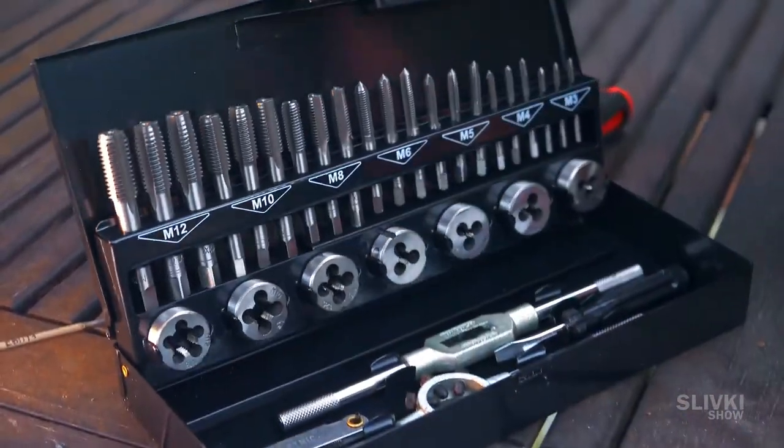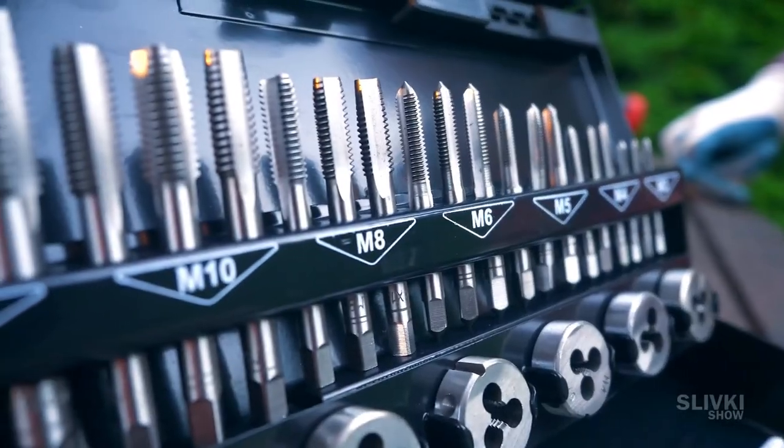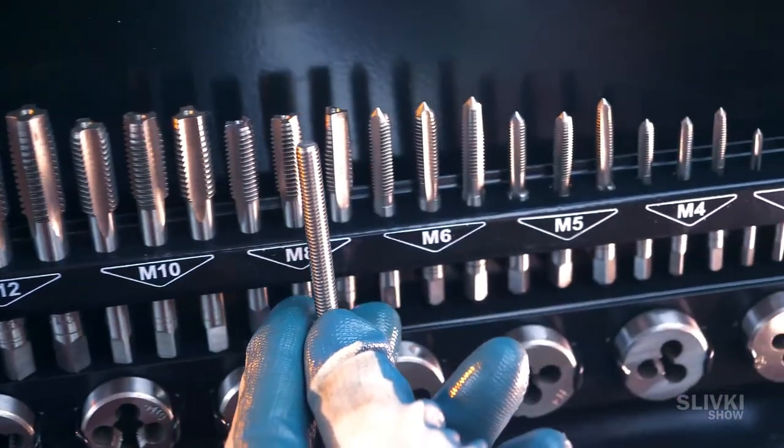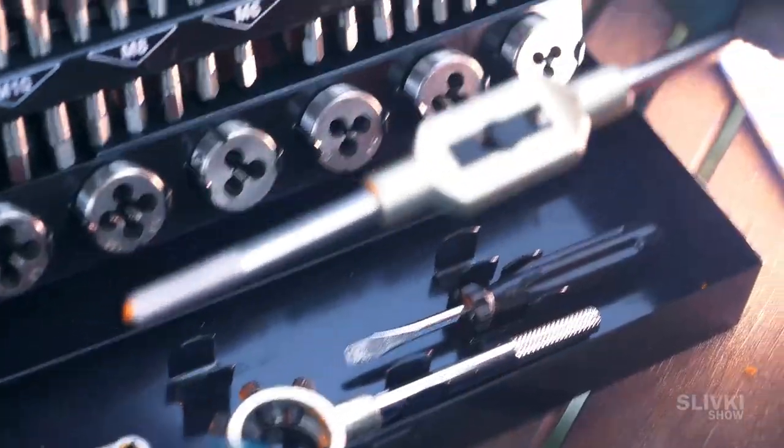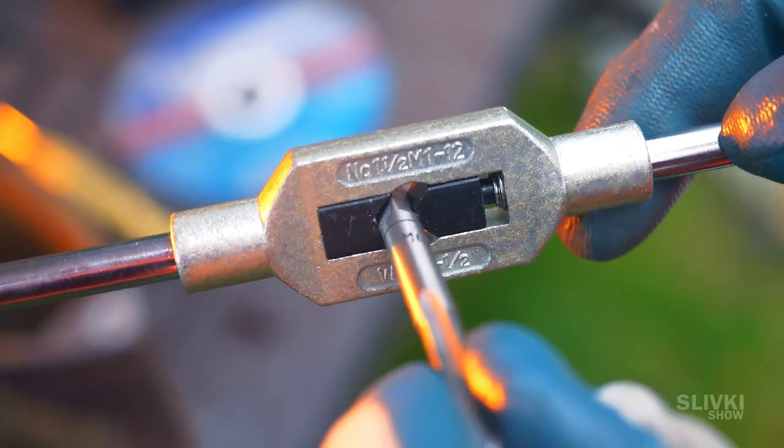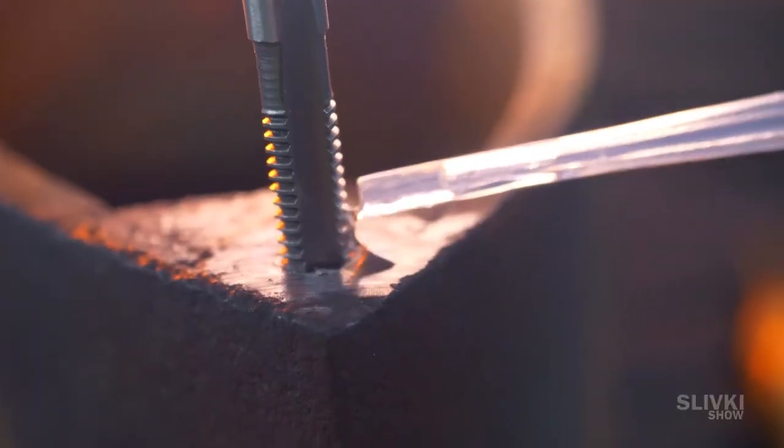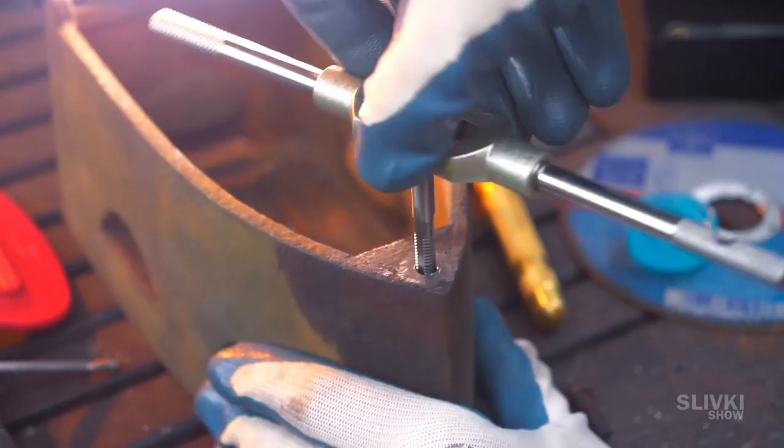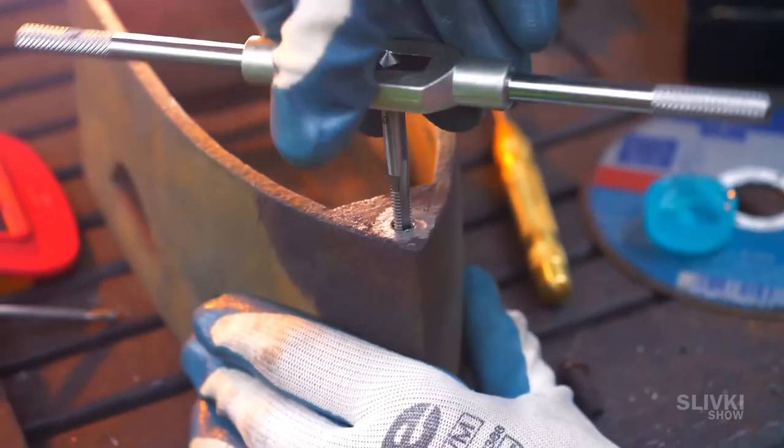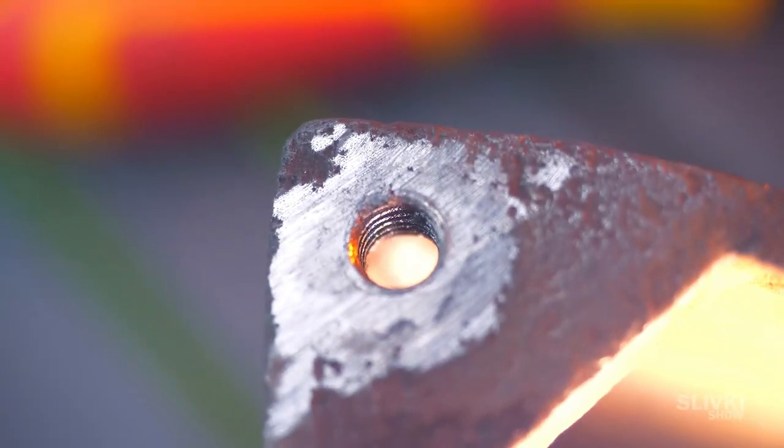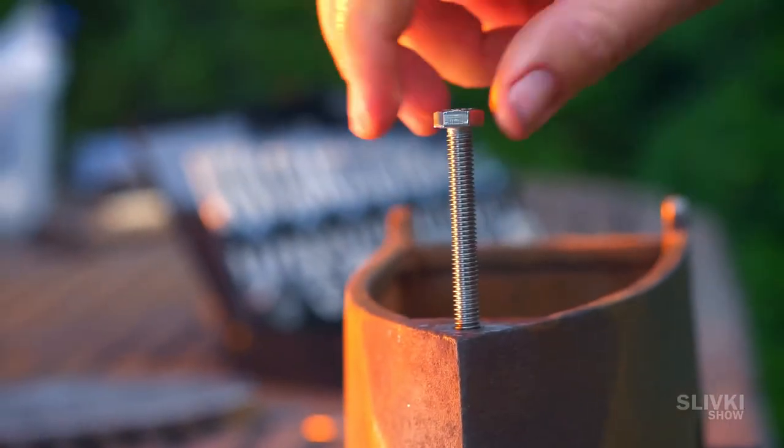So we bought this great threading kit. It looks very interesting and we can't wait to try it out. We will find one with a suitable diameter, fix it in the special handle, insert it into the hole and apply lubricant on it to make it slide. And that's how you try to cut a thread into a hole. A little twist back and forth and it seems to work. The bolt screws in without any problems.